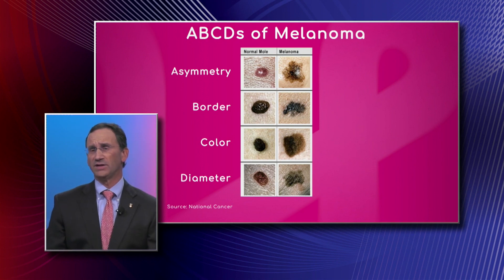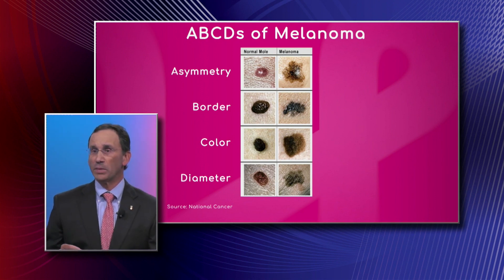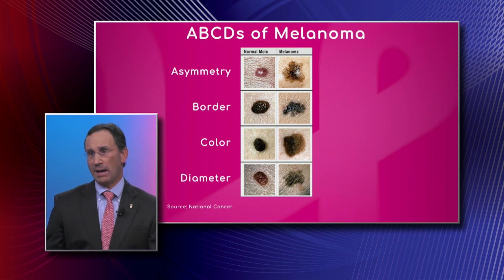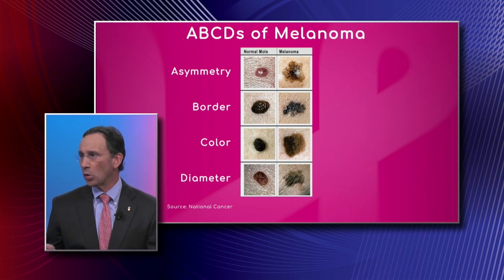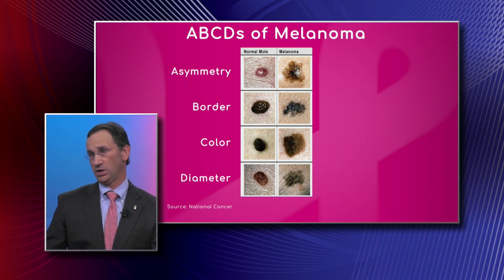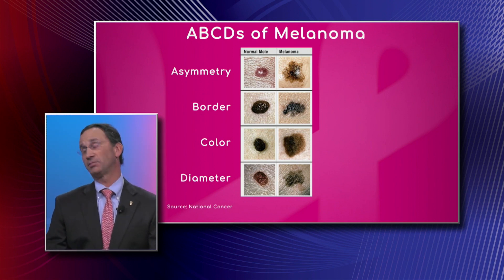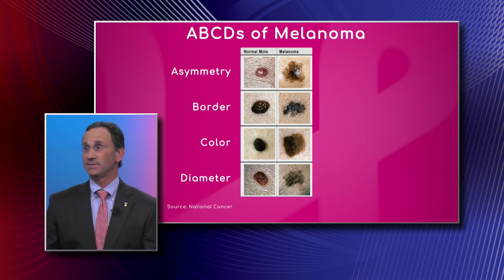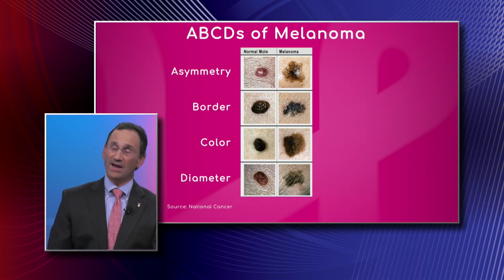Lastly, the D is for diameter — a lesion that is more than five millimeters in diameter by size criteria alone is suspicious for melanoma. The E is not pictured in this graphic. E is perhaps the most important, and it stands for evolution.